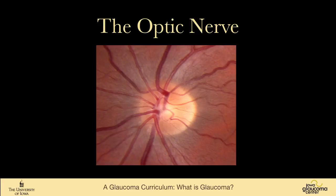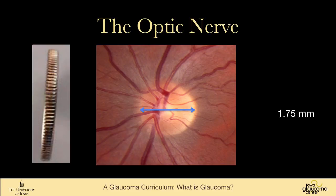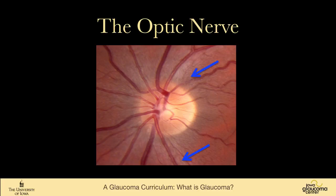This is the optic nerve — a view of a healthy nerve in a young patient. The average nerve is about 1.75 millimeters wide, which is about as wide as a U.S. quarter is thick. It is made up of nerve fibers that travel across the surface of the retina. In this young patient you can see a stripy pattern to the surface, though most times the nerve fiber layer is clear and hard to see.